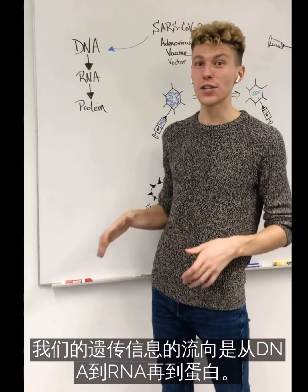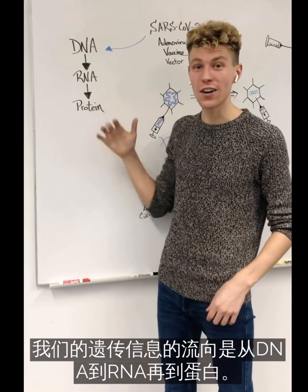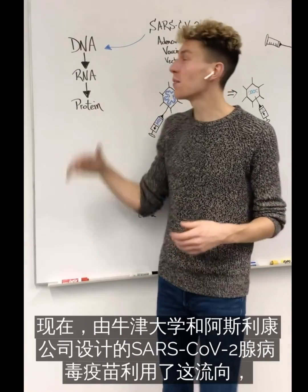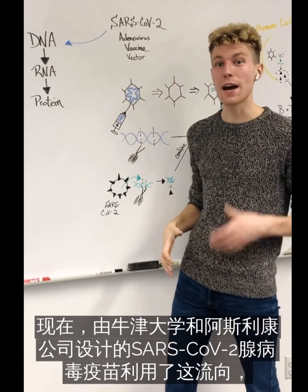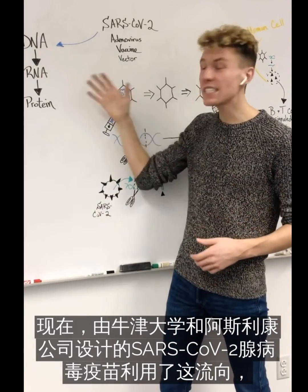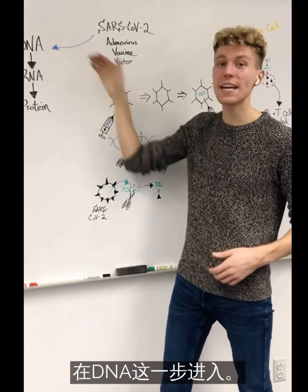The flow of our genetic information moves from DNA to RNA to protein. Now, the SARS-CoV-2 Adenovirus vaccine vector, designed by Oxford and AstraZeneca, takes advantage of this pathway by coming in at the DNA level.